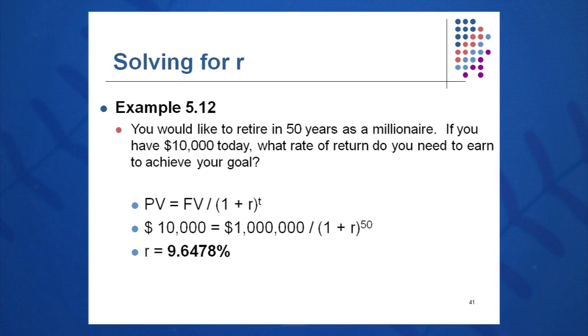Here's another retirement example. You want to retire in 50 years as a millionaire. Let's say, in this case, you're 15 and you decide to start saving early and you want to retire when you're 65. You have $10,000 invested.